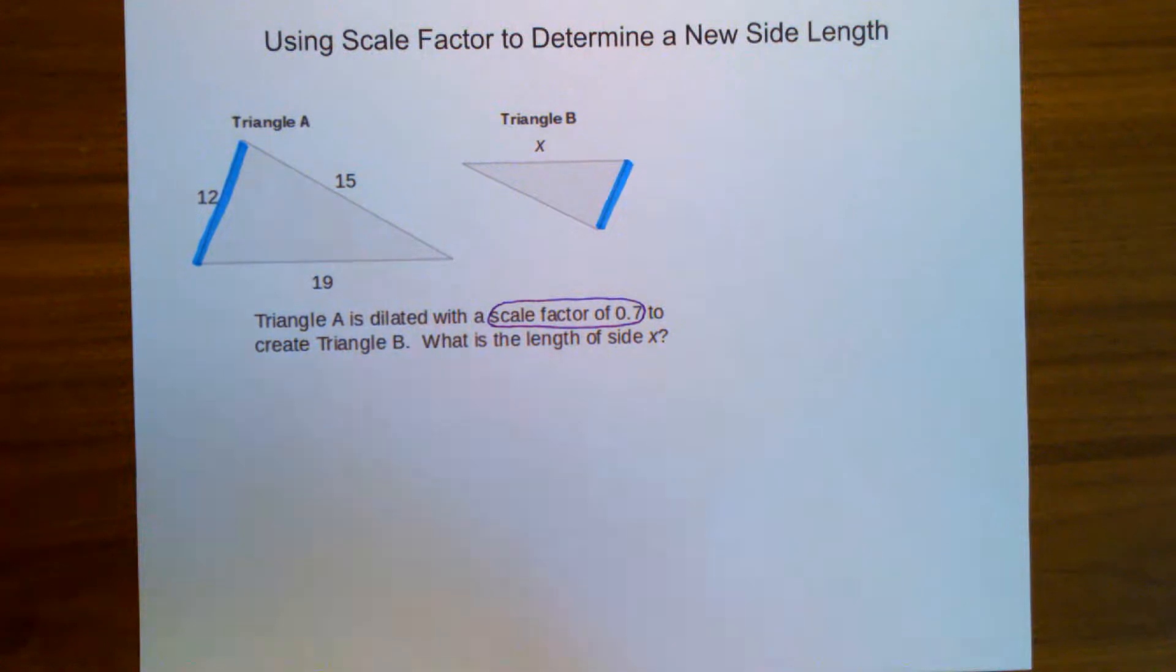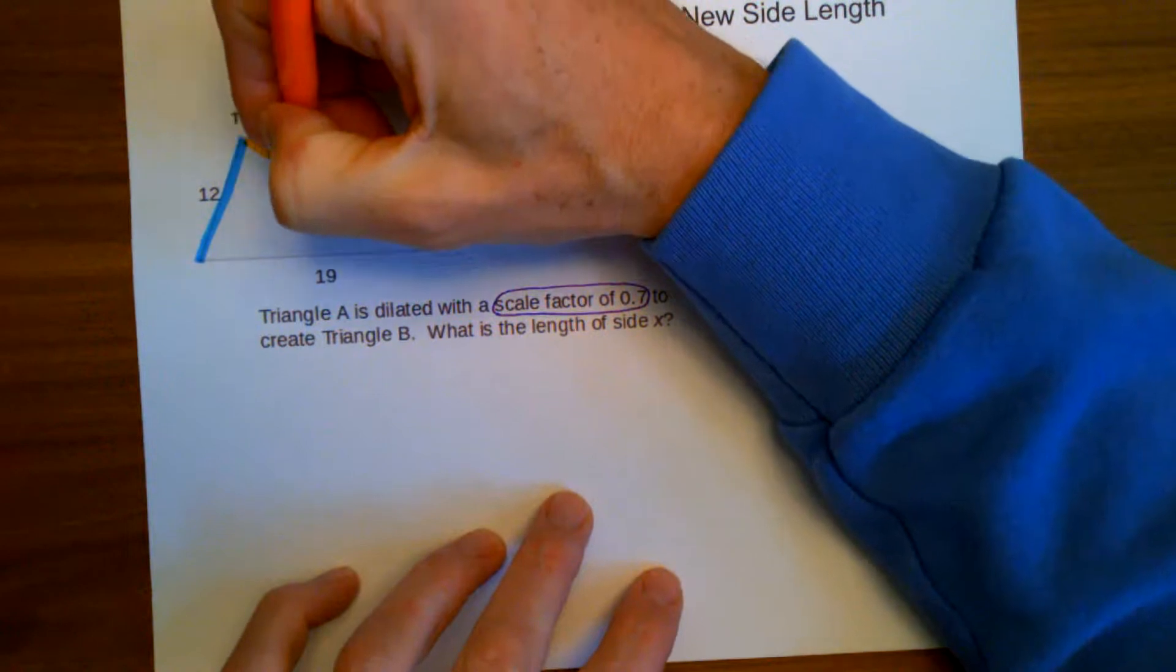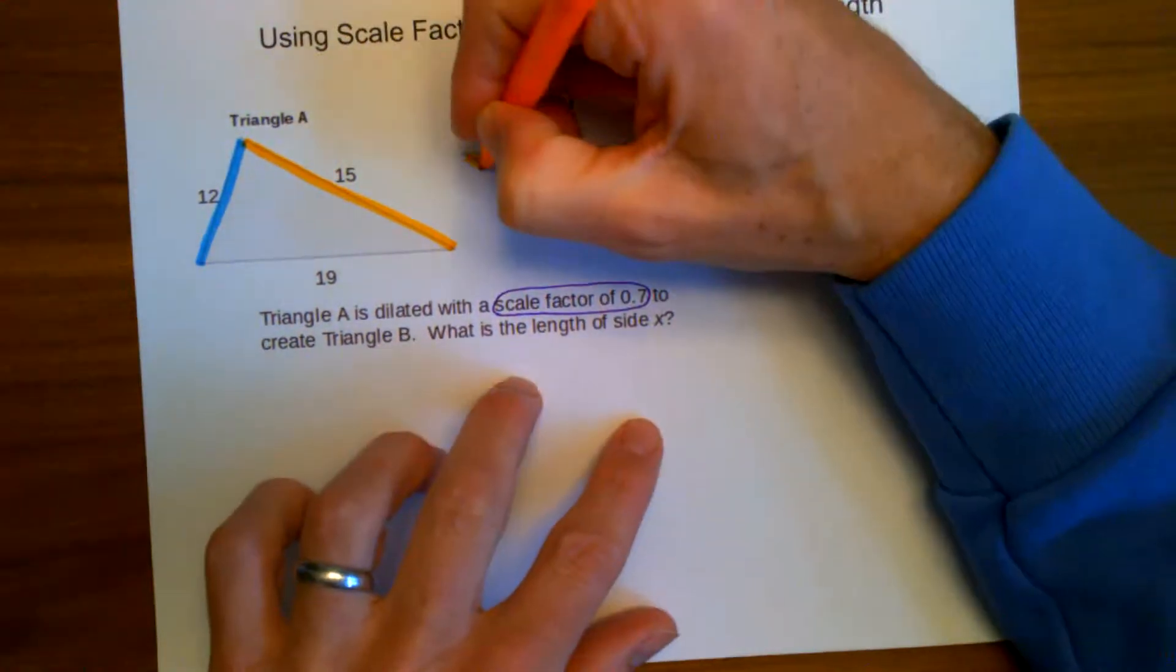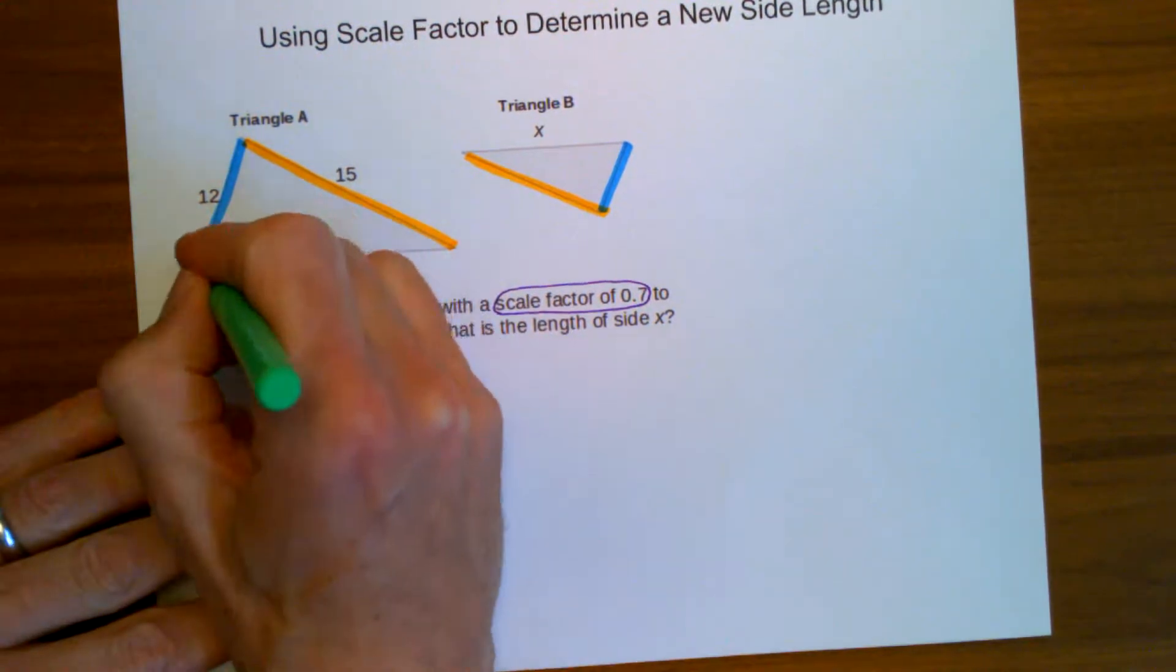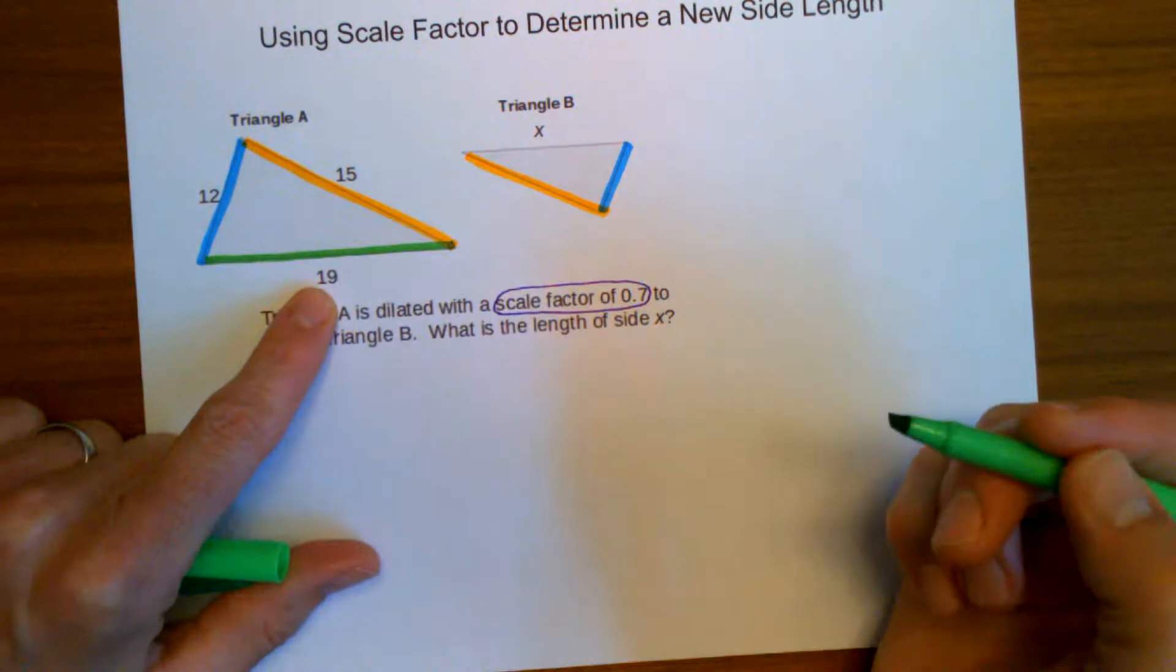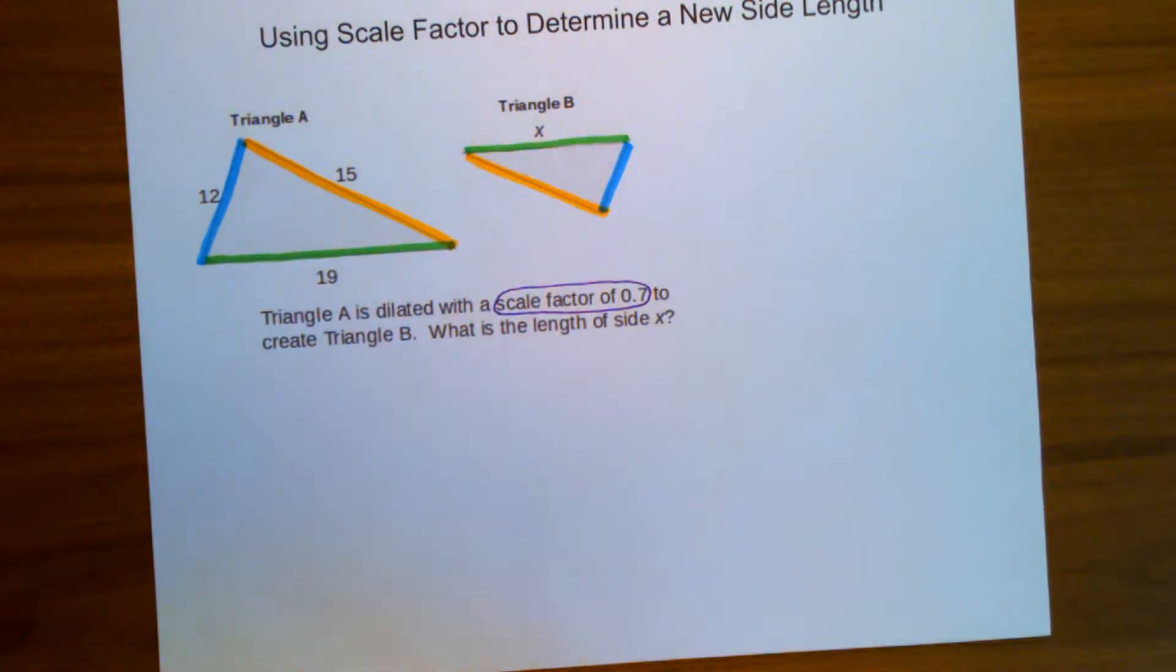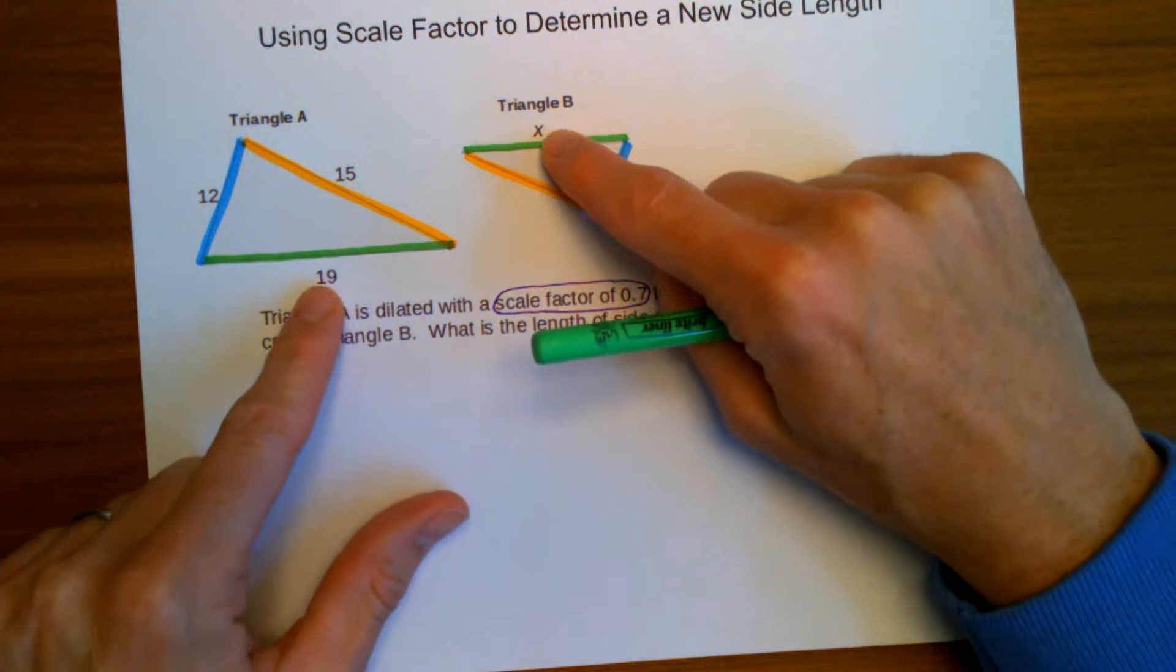The medium length side, in this case, is marked with a length of 15. So here is the medium length side. That's going to match up with the medium length side on that one. And then the longest side has a length of 19 on this large triangle. That's the unknown side over here.